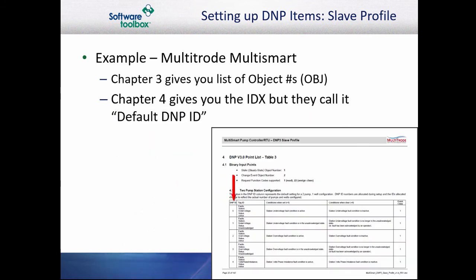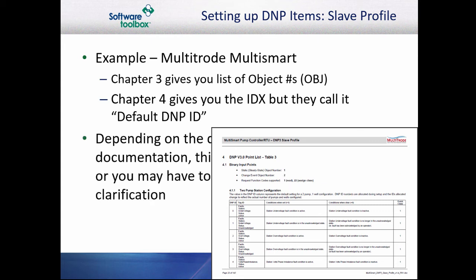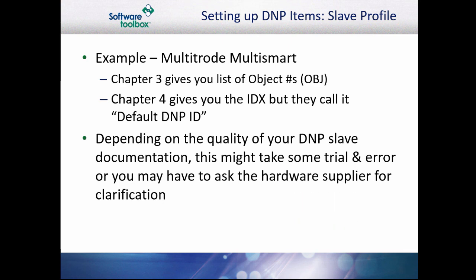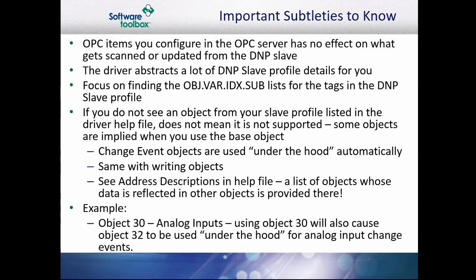Chapter 4 gives you the index — though they call it the DNP ID — conditions when set and clear, and the event class for the point. In a proper DNP3 implementation, your number of tags in the client or server will have no effect on what points are scanned or updated from the DNP3 slave. The driver abstracts a lot of the DNP3 protocol and slave profile details, so you don't have to get caught up in those.